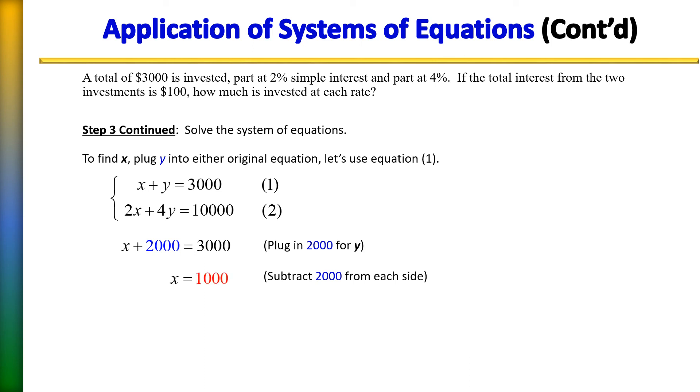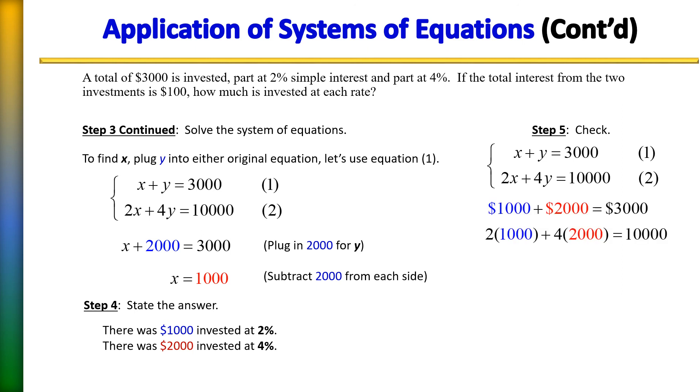So as you can see, 1000 was invested at the 2% interest and 2000 was invested at 4%. We can check our solution by simply plugging those values back into the original equation. And you can see that it does check out that this is indeed our solution to this problem.